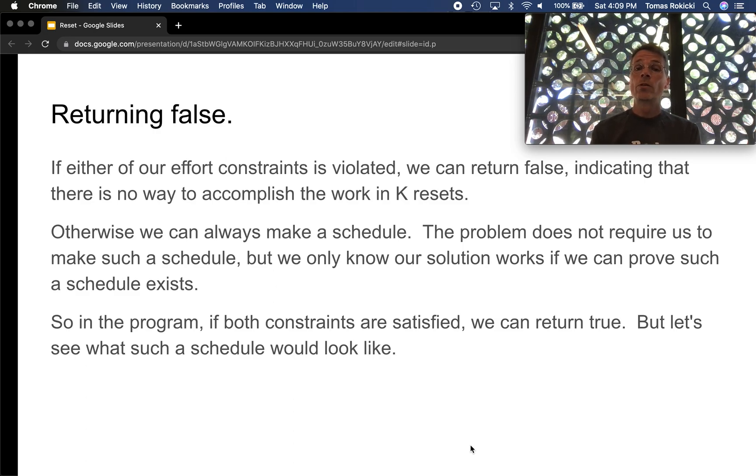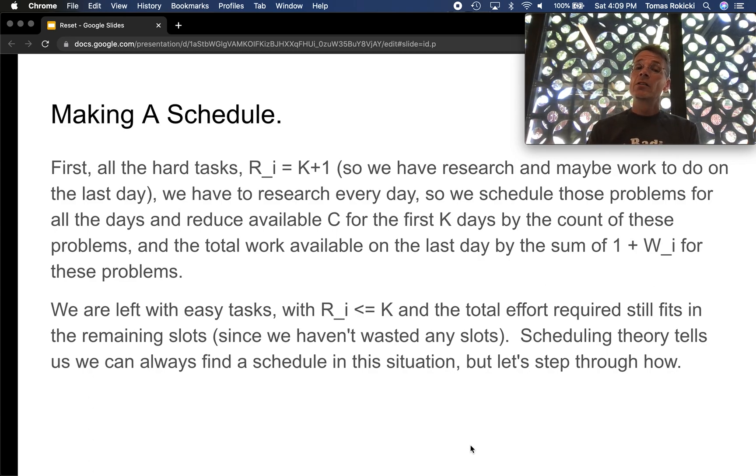Now the problem doesn't actually require us to make such a schedule. But we only know our solution actually works if we can prove such a schedule exists. So in your solution program if both the constraints are satisfied just return true. But let's prove that this works. Let's see what such a schedule would look like. So to make this schedule what we do is first we schedule all the hard tasks. We know we need to do research on every single day for those tasks. And we know there may be leftover work in the last day for those tasks. So we just go ahead and fill that in for the relevant days.